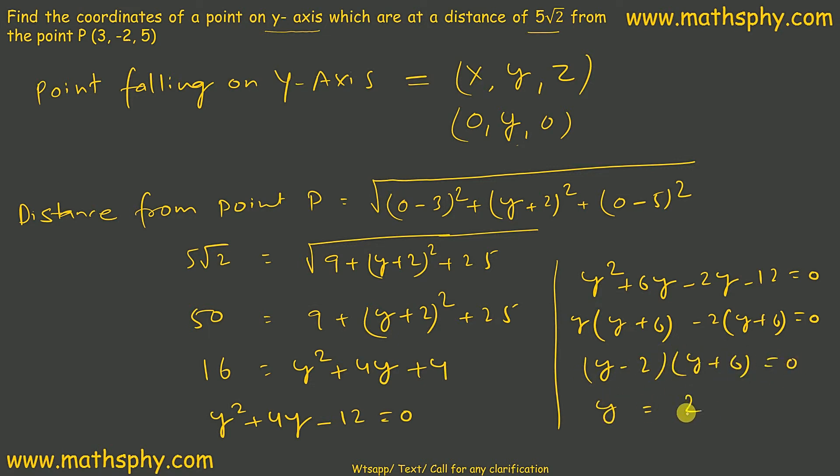So y minus 2 and y plus 6 equals to 0. So y can be 2 and y can be negative 6. So coordinates can be 0, 2, 0.